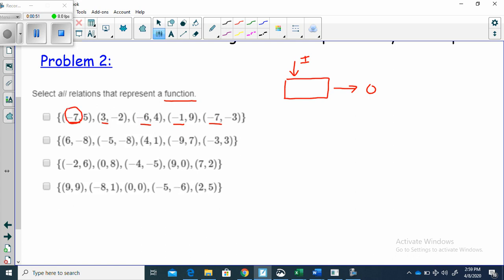Do we have two different outputs for that negative 7? Yes, here we put in negative 7 and we get out 5. Here we put in negative 7 and we get out negative 3. This one's not a function.